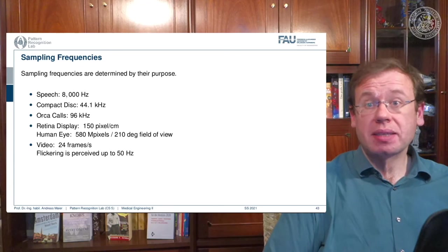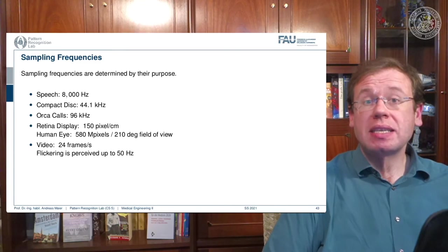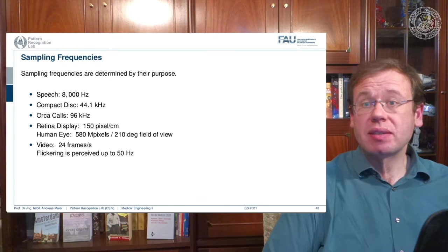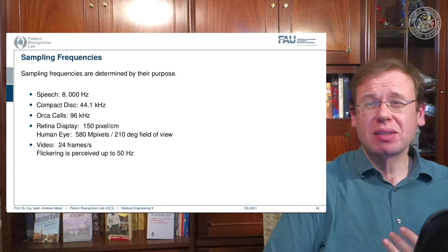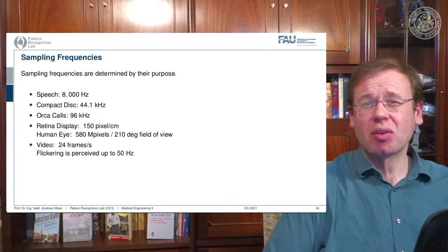And then you find surrogates in order to make sure that the correct information was transmitted. If you think about compact disc, so audio, then a very frequent frequency limit for sampling is 44.1 kilohertz. So this was the sampling frequency of the compact disc.